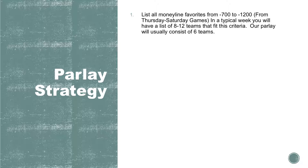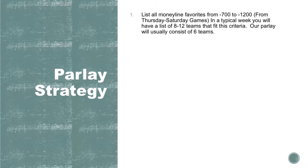We don't want to make our list on Sunday night when the lines first come out for the following week, because we want the lines to be seasoned — meaning we want some action to be put on these games. If there's a bad line it will correct itself; a lot of the sharps will attack a bad line early. Creating this list on Monday or Tuesday gives the line time to be seasoned. In a typical week you'll have a list of about 8 to 12 teams fitting this criteria.